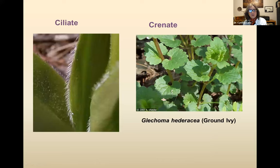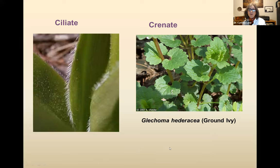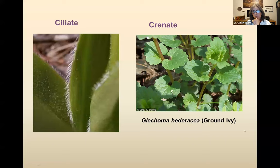Sometimes you'll see ciliate margins — little hairs just on the edge of the leaf. With some honeysuckle species, that's how you tell one species from another. There are a whole bunch of different margin types — one example is crenate, with rounded little edges, as on creeping Charlie.